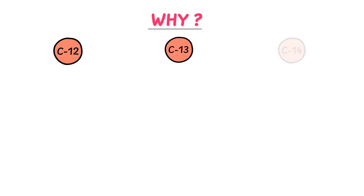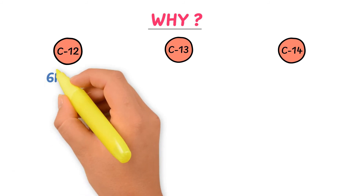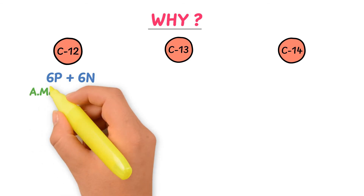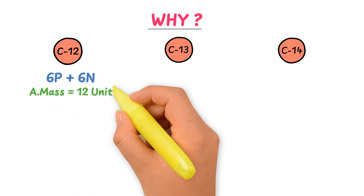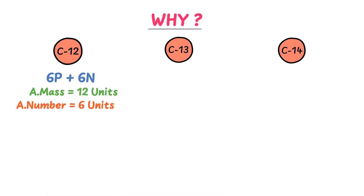Why do we call these carbon atoms carbon-12, carbon-13, and carbon-14? It is because of their respective masses. In carbon-12 there are six protons and six neutrons, so its atomic mass is 12 units and its atomic number is six because of the six protons. So we call it carbon-12.